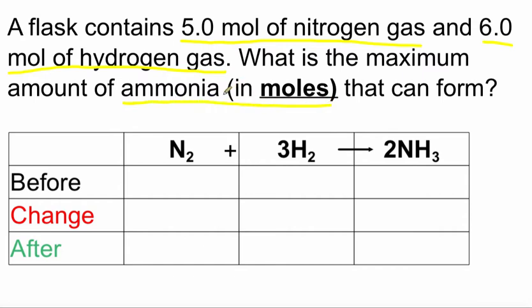So a helpful tool for analyzing at this point is something called a BCA table. And a BCA table, we practiced it in class, but it helps us to organize what we start with, how things change, and what we end up with at the end of everything. So I'm just going to fill it out, remembering that the only values that I can ever put into a BCA table are amounts in moles. So before, let's see, we had five moles of nitrogen gas, and we had six moles of hydrogen. And before the reaction happens, of course, we would have zero ammonia.